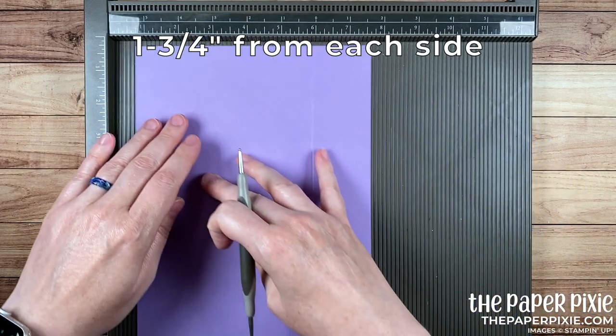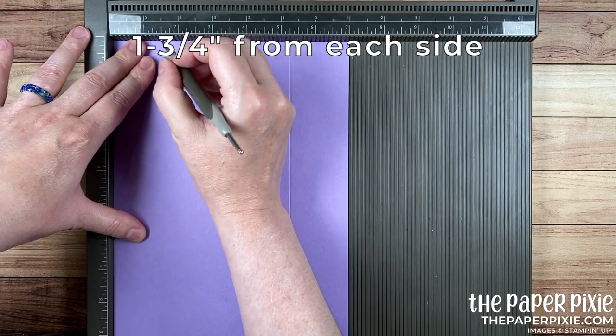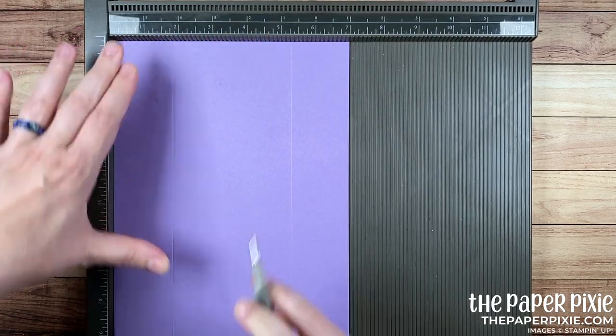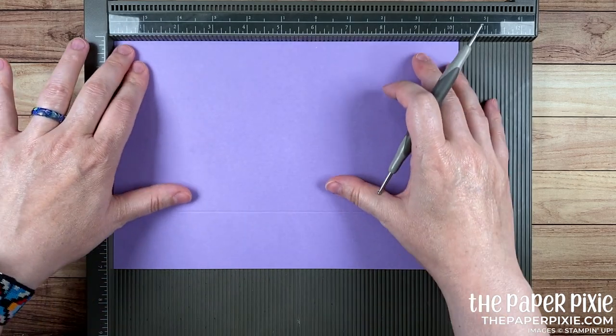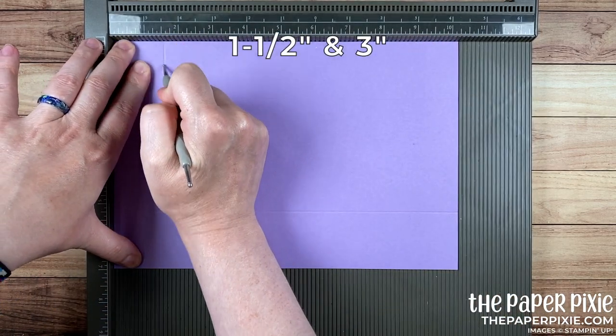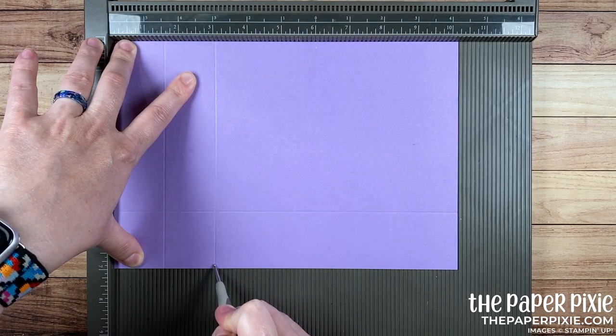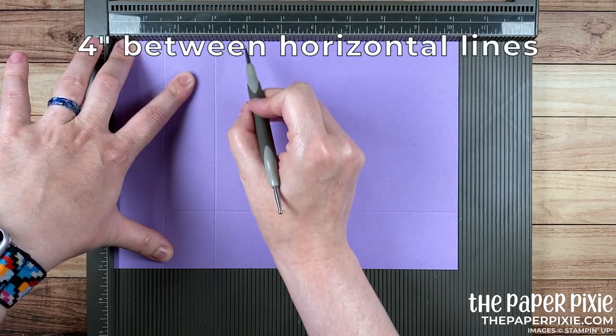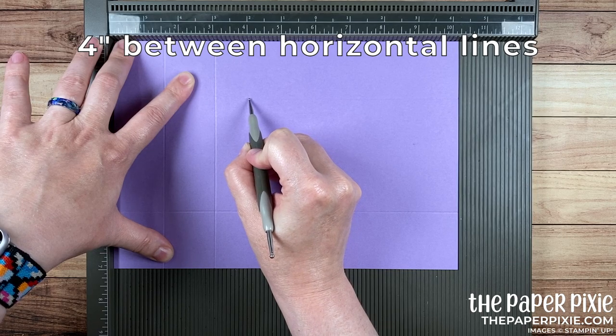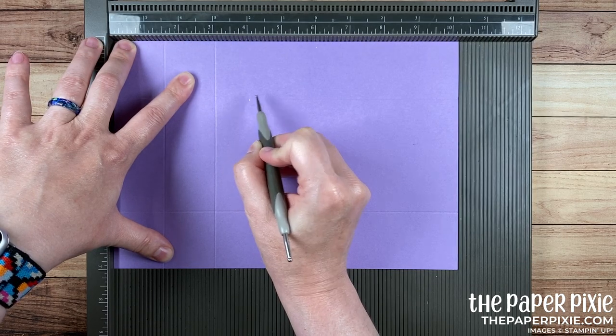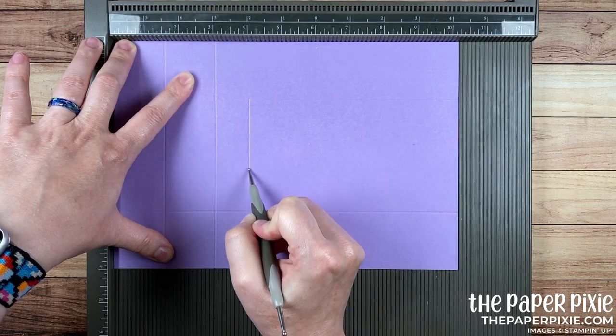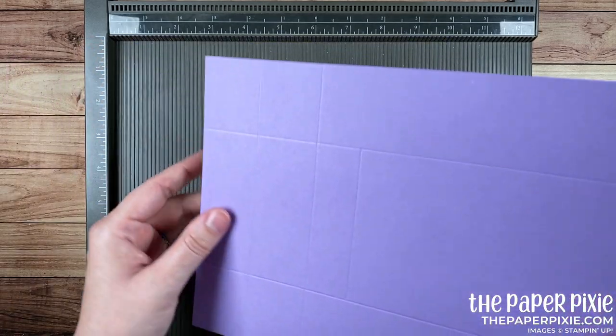So one and three quarters and one and three quarters and I'm going to rotate it to the ten and a half inch side and we're going to score this at one and a half and three and then I'm going to score it at four but only between the two horizontal score lines. So I'm kind of eyeballing it trying to pick up the groove there at four inches and then we're scoring just between those two horizontal score lines.